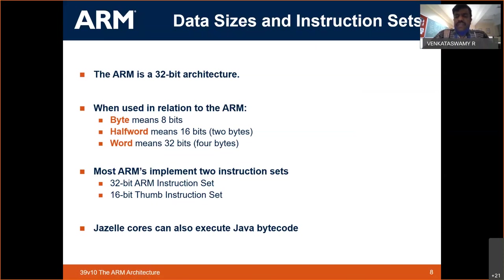JAZELLE is basically a runtime environment provided in the hardware itself. What JAZELLE does is allow you to execute Java bytecodes directly. When you write a Java program, normally you convert it to bytecode and then to binaries. With JAZELLE, that bytecode can be run directly on the ARM microprocessor itself — this is the platform called JAZELLE, which you won't find in any conventional microprocessor or microcontroller.